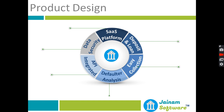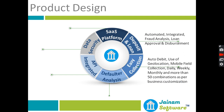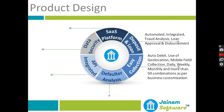Now let's look at the product design. The different components of JNM Software include deposit and loan, easy collection, defaulter analysis, API integration, data security, and the SaaS platform. For deposit and loan, this is a single platform where both deposits and loans can be managed. Customers can directly apply for a loan or deposit; all checks are done, and once the loan approval process is complete, the loan amount can be disbursed automatically.